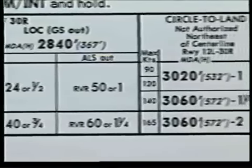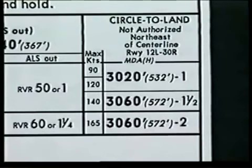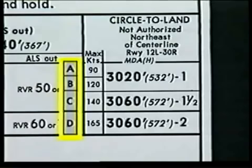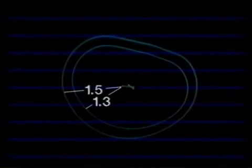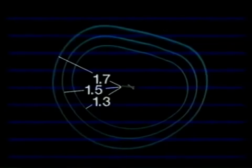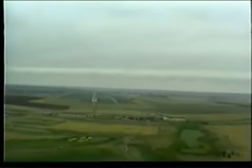On the far right are the circle to land minimum altitudes and visibilities. The protected airspace during a circle to land maneuver depends on your aircraft's approach category, which is based on its airspeed. This airspace ranges from 1.3 nautical miles from the runway ends for a category A aircraft to 2.3 nautical miles for category D aircraft. Remember, if you're flying the maneuver at an indicated airspeed faster than the maximum limit of the speed range for your category of aircraft, you should use the next higher speed range. Otherwise, you might not have the necessary obstacle clearance.